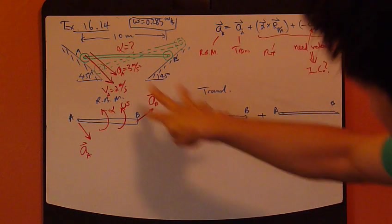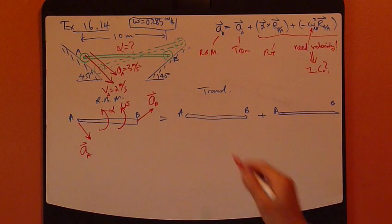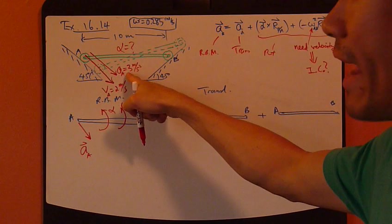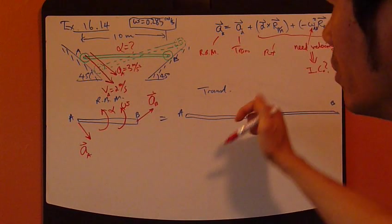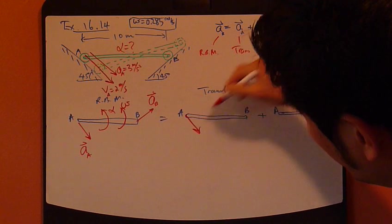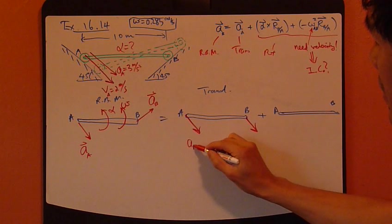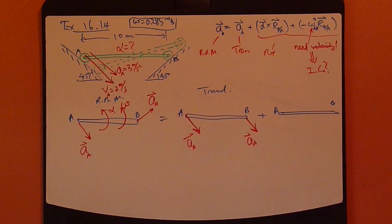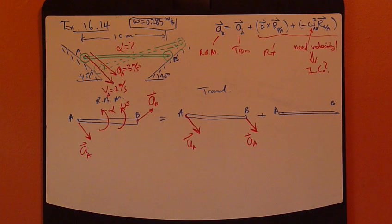Again, for translation, we usually use whatever that's given. So what we know is acceleration at A. So I'm going to use point A as the translational quantity. So as this, this whole rod is accelerating at AA. And then the pure rotation part, and that's where these two terms come in.